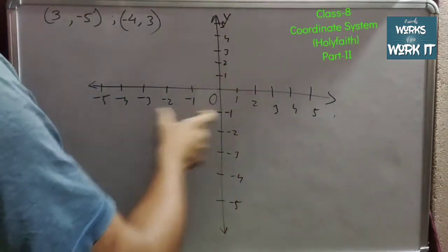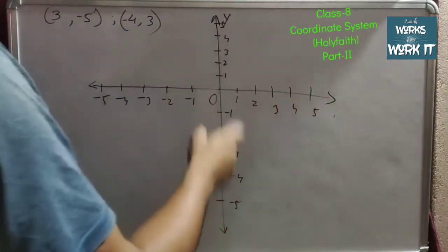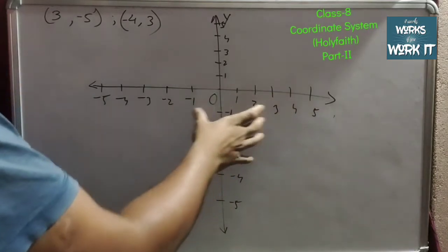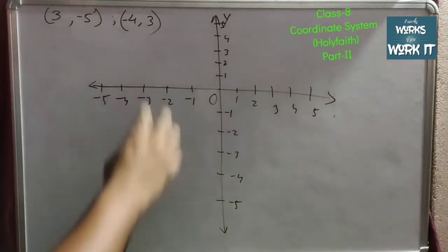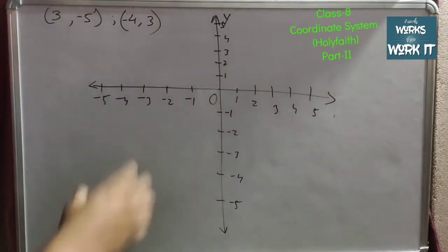It needs to be in equal distance. Whatever numerical values we have written here should have the same distance among themselves. Using the graph will make it appropriate for plotting the points.